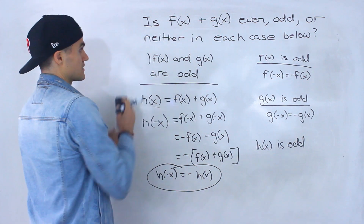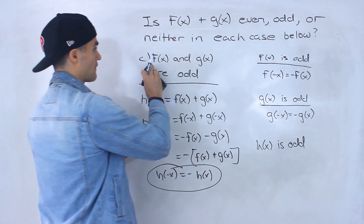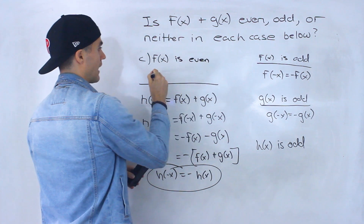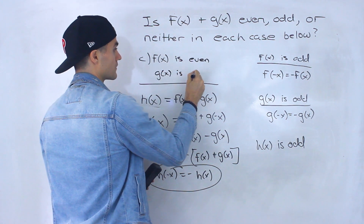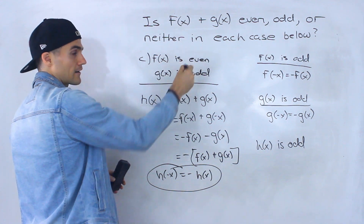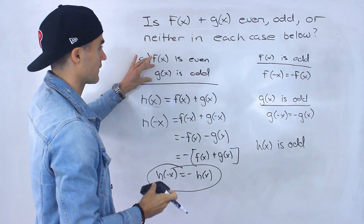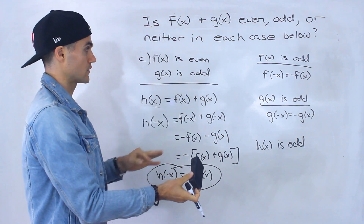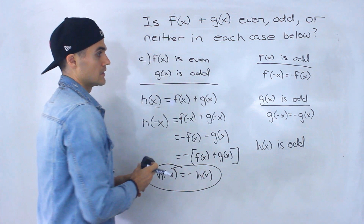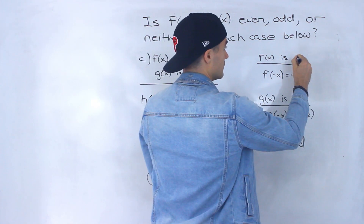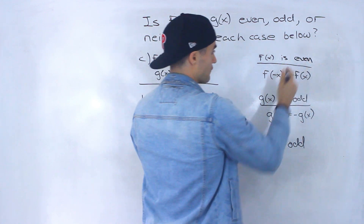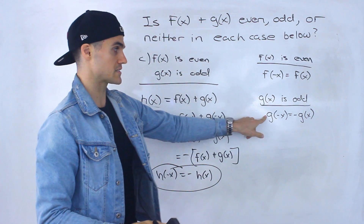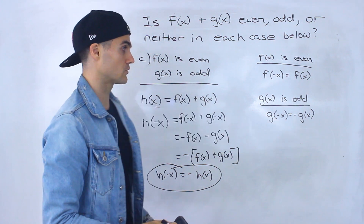For part C, if f of x is even and g of x is odd — and it doesn't matter which one you label which, we're adding an even function and an odd function. So f of negative x equals f of x, and g of negative x equals negative g of x.